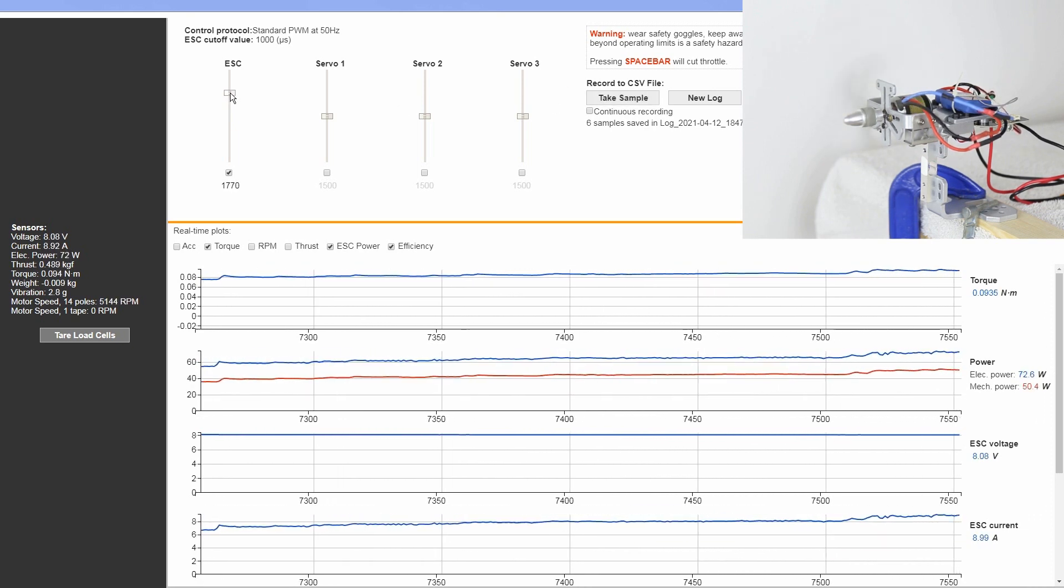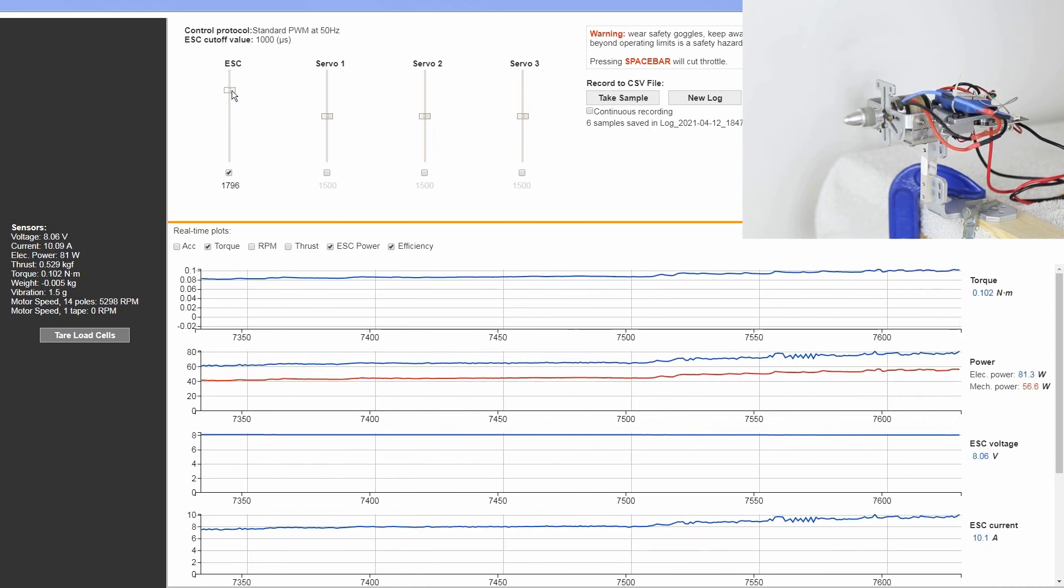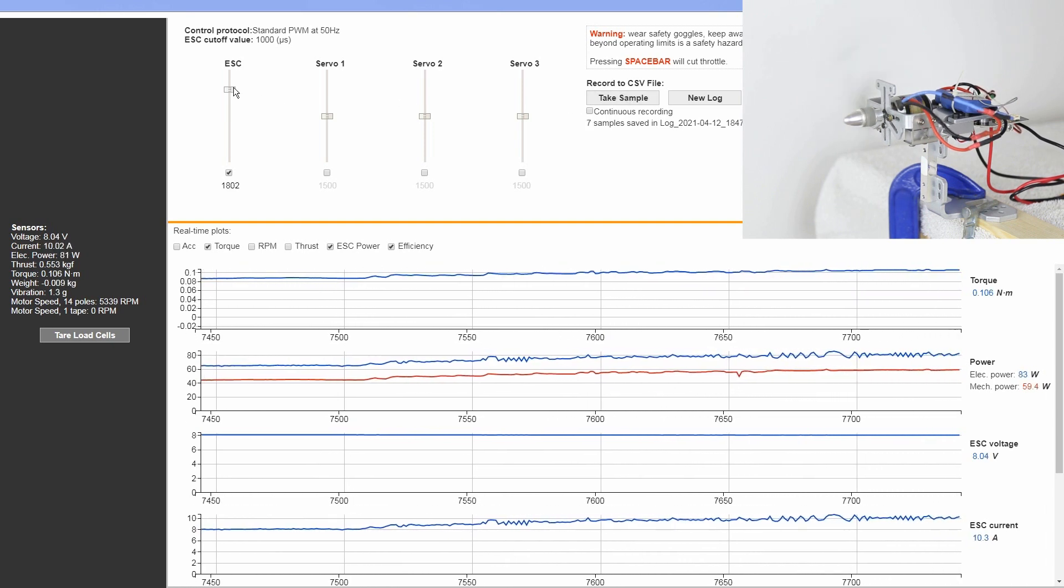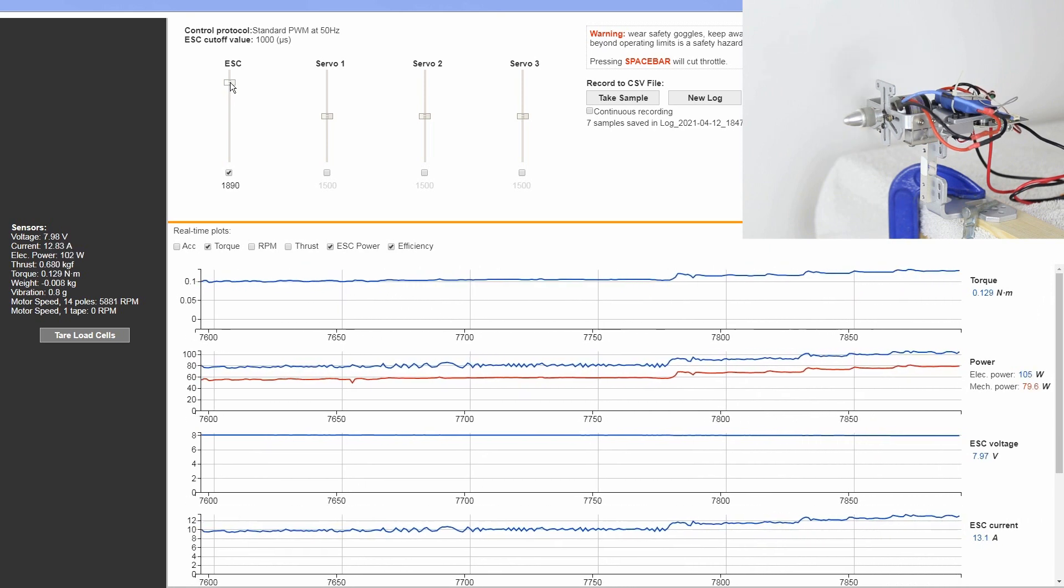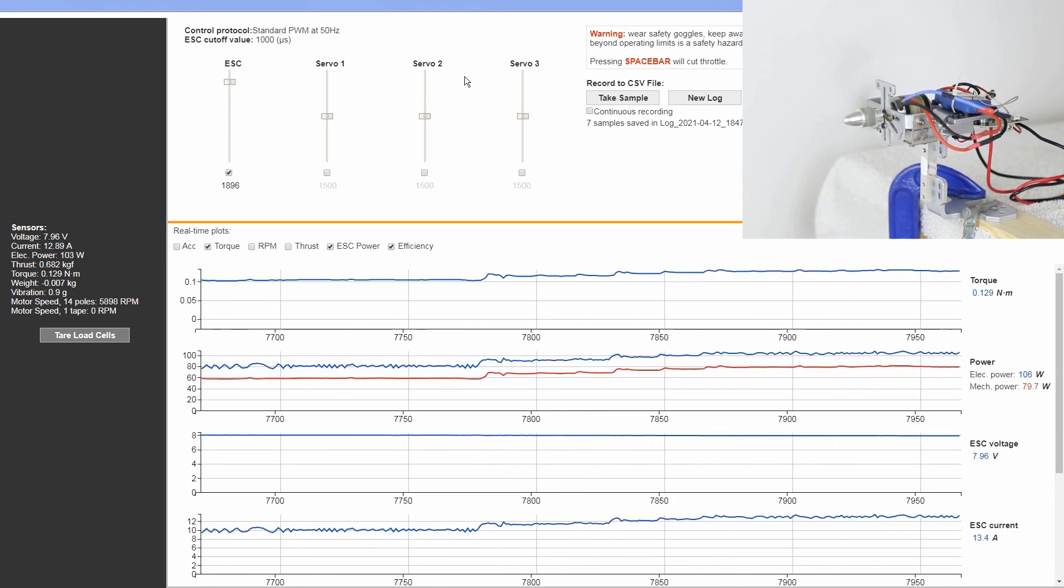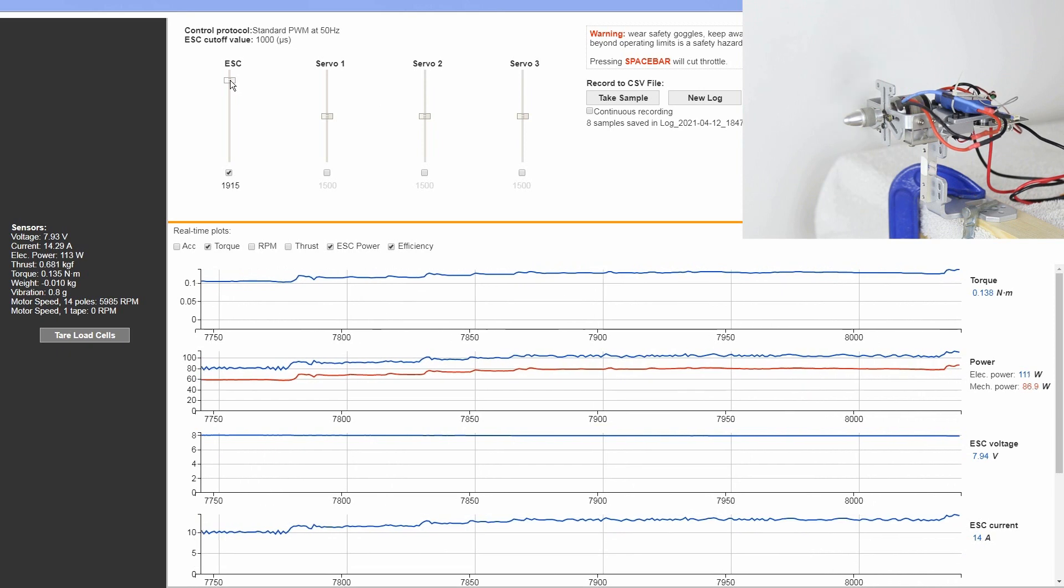The important part here is that we're seeing the performance of this propeller match the amount of throttle that we're inputting. As we apply more throttle, we pull more power when we get to that constant speed. There's not too many outside variables that affect this system.